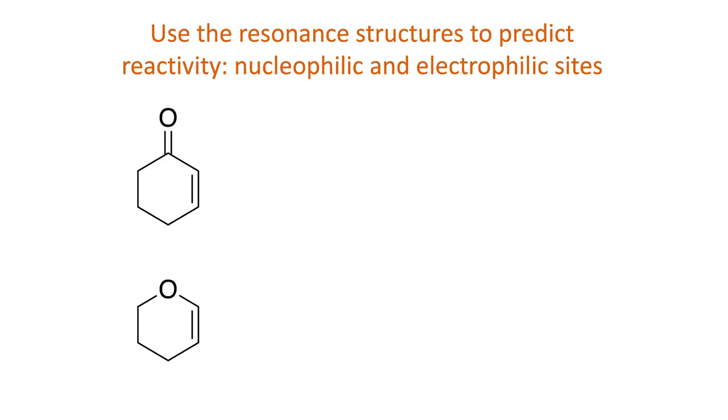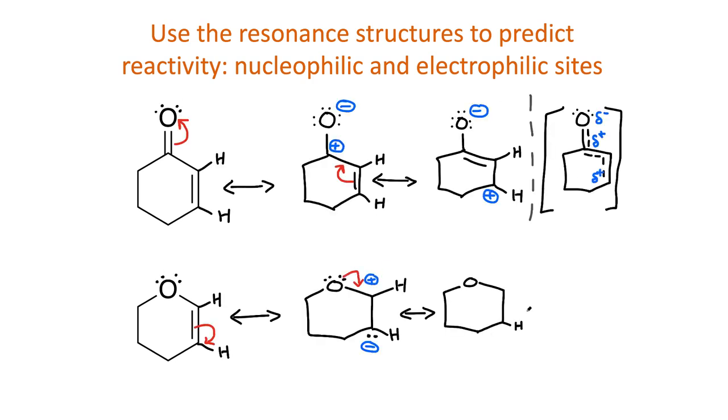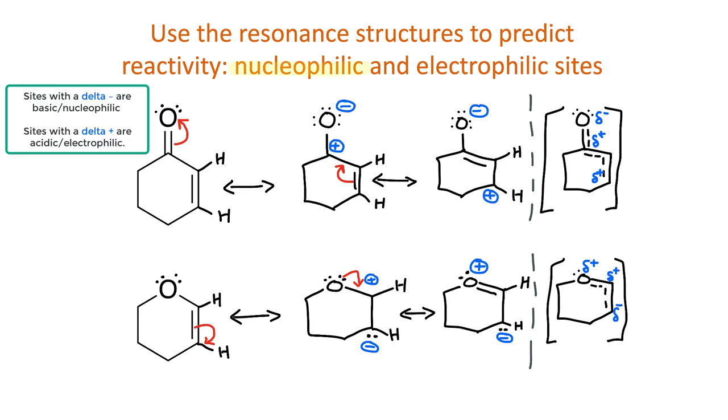The resonance hybrid also gives us important information about the reactivity of a molecule. Take a minute to draw the resonance structures and hybrid of the two molecules on screen. Now indicate the nucleophilic and electrophilic sites on each one. The partial charges in the hybrid tell us which sites are most nucleophilic or basic, and which are most electrophilic.